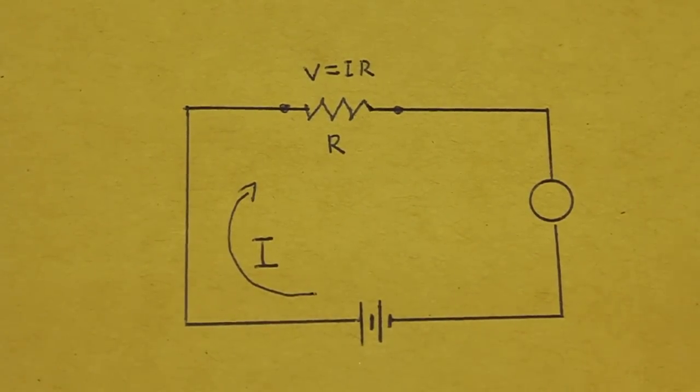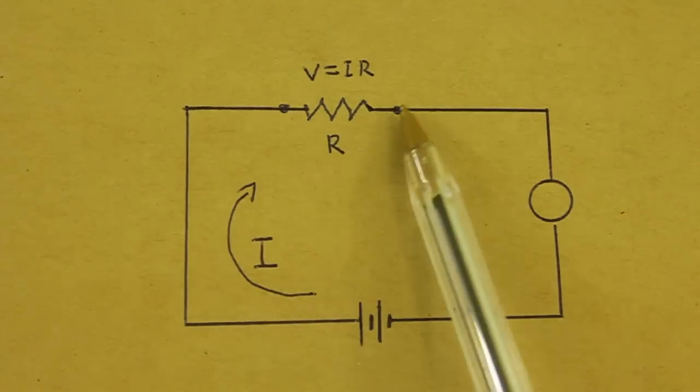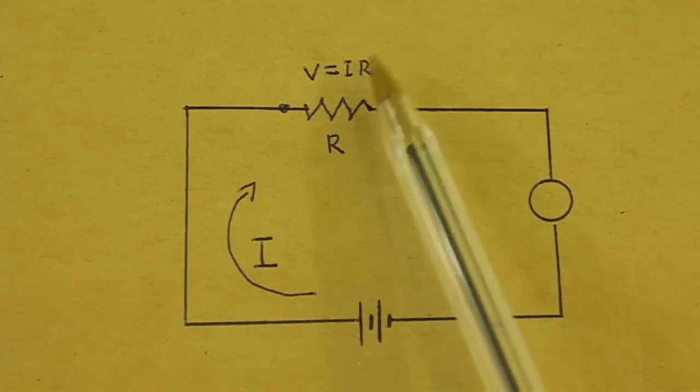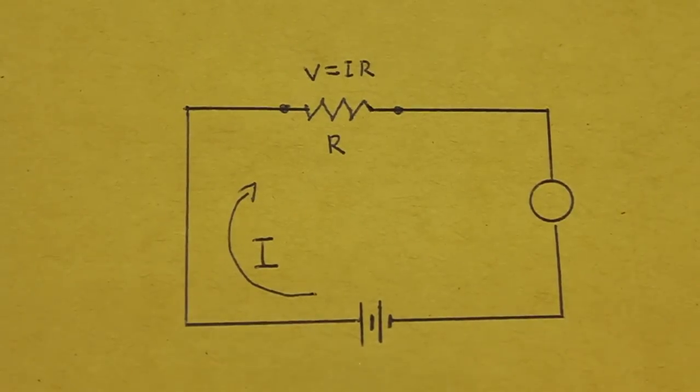Therefore we can know the value of the current if we measure the voltage and divide by the value of the resistor which is known. Of course in order not to perturb the system we need to put a very small resistor.